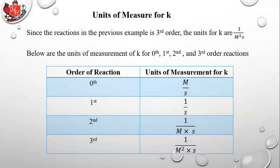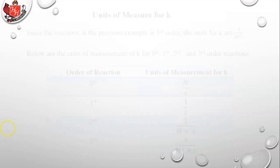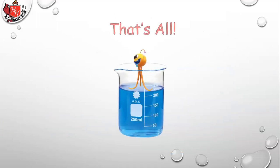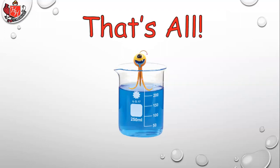So here's a summary of the units of measure for K for zeroth, first, second, and third order reactions — just a summary of what we saw on the last slide. That takes care of our first lesson in kinetics on the rate law and rate expressions.